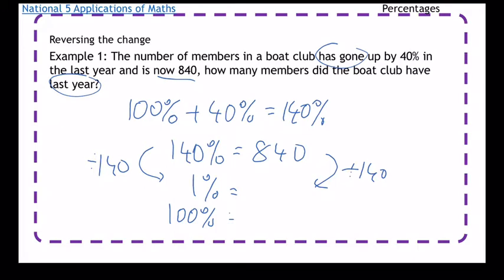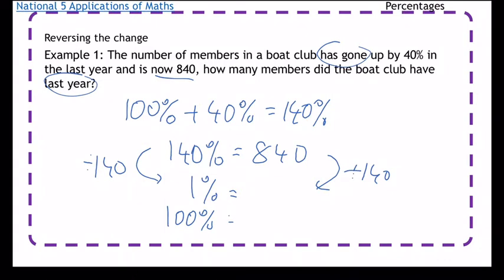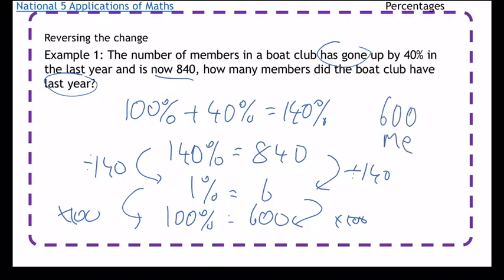So 140 divided by 140 gives me 1%, and then 840 divided by 140 gives me 6. Then what I'm going to do is times both sides by 100, so it's 600. So there were 600 members.